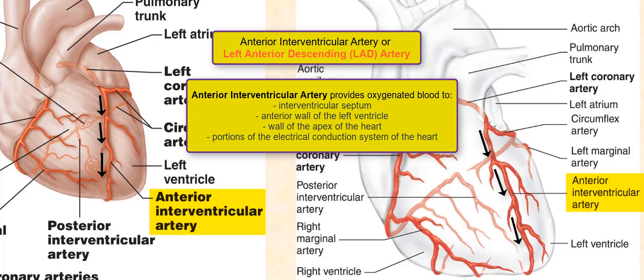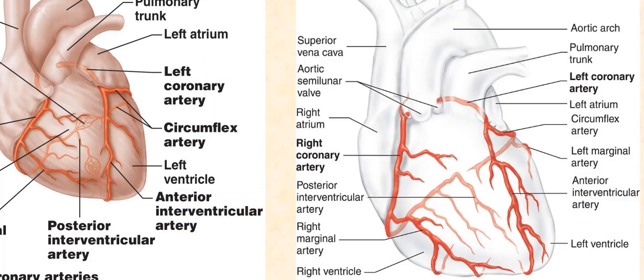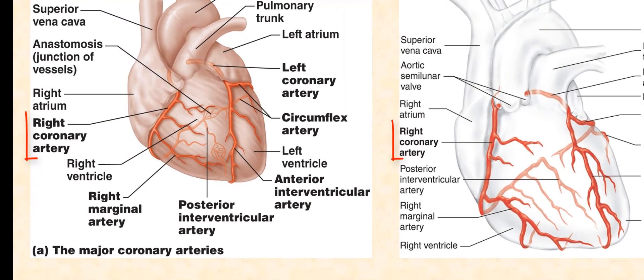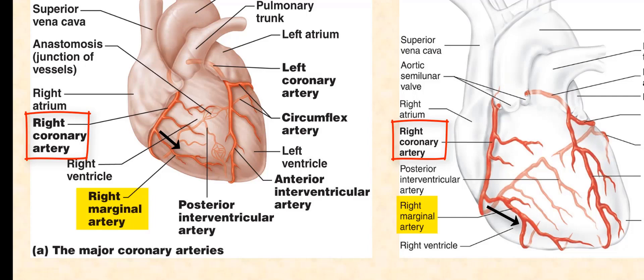The electrical conduction system of the heart is discussed in the physiology of the heart. Let us now discuss the right coronary artery. The right coronary artery branches into two major arteries: the right marginal artery and the posterior interventricular artery.